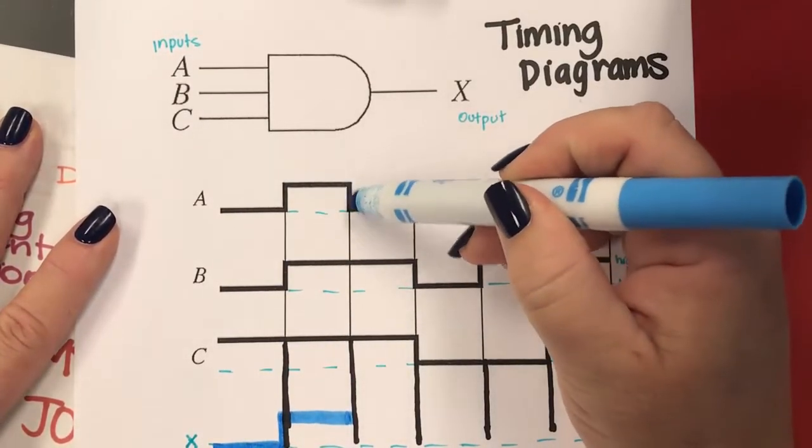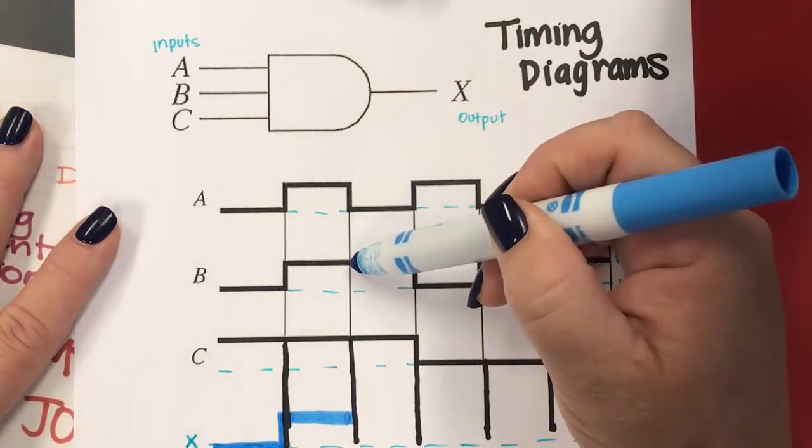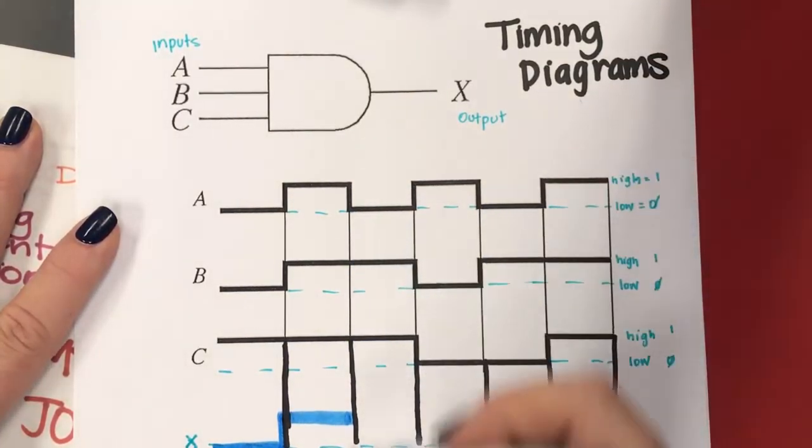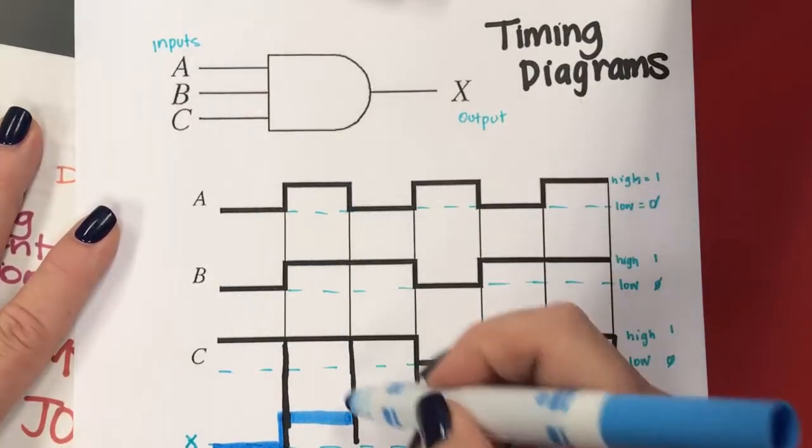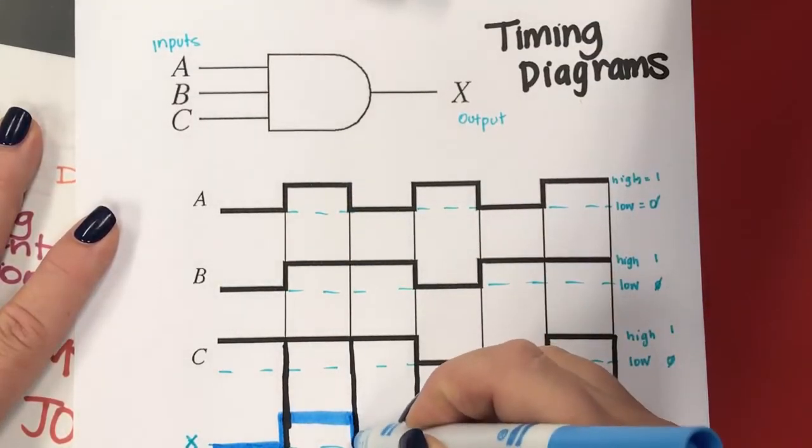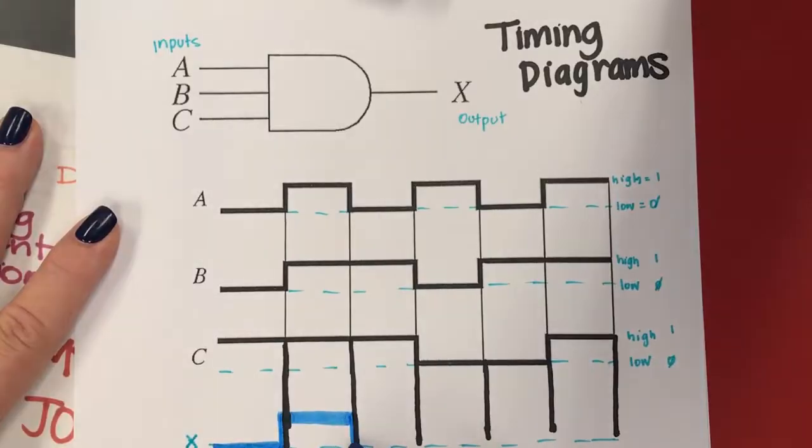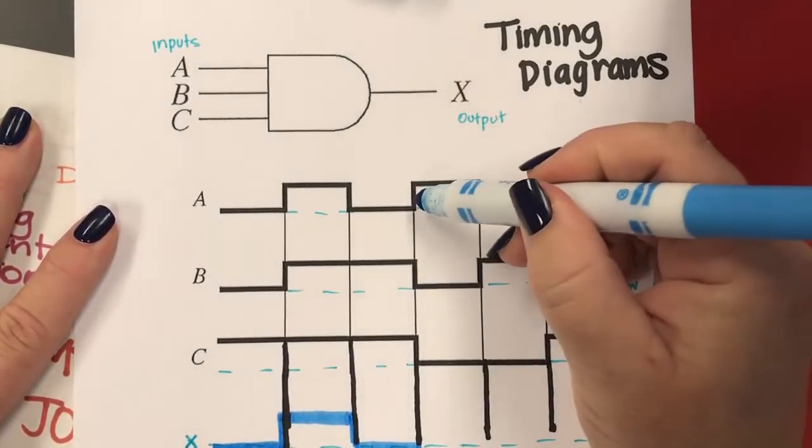We're going to check again, so now A has gone to zero, B is still one, C is still one, but A being zero means it's going to go low. So it's going to go low and stay low across there, we're going to check again.